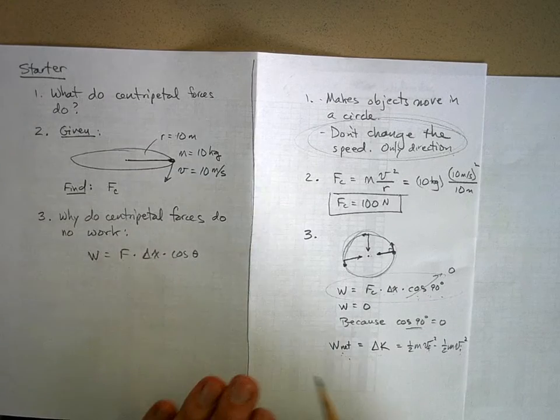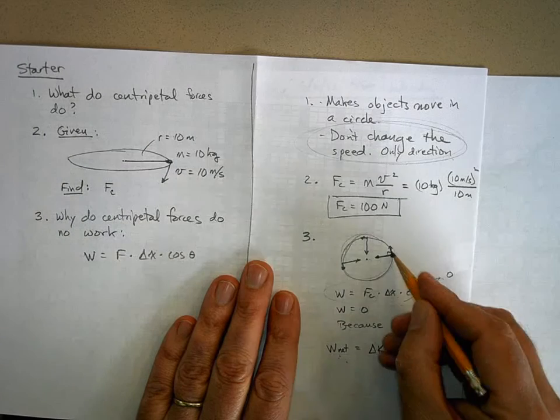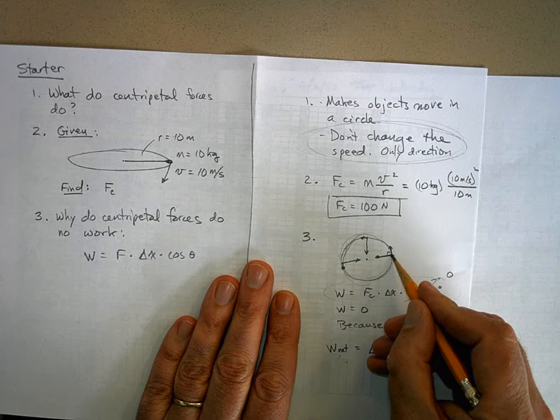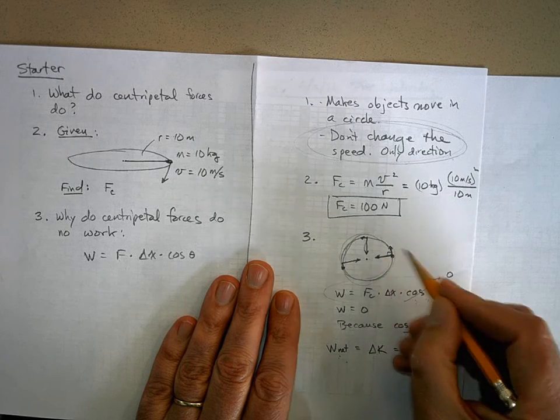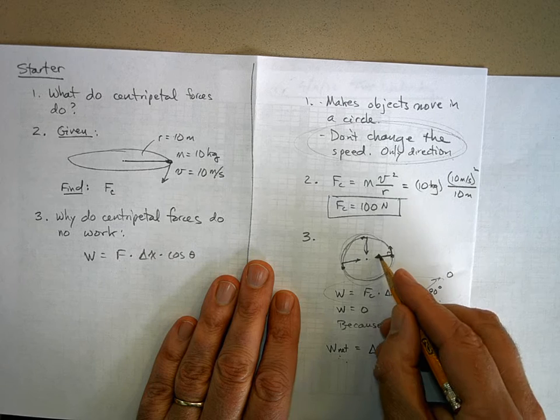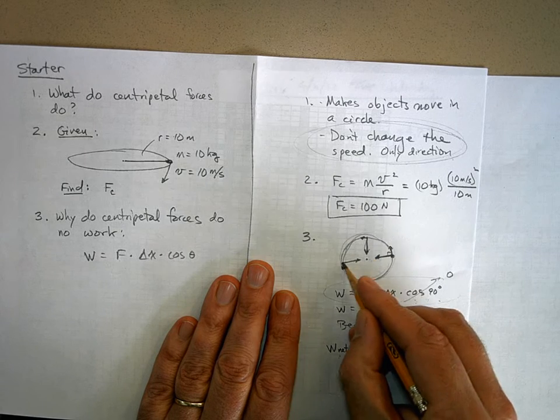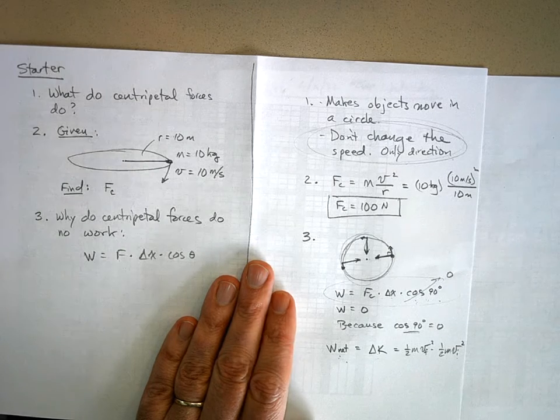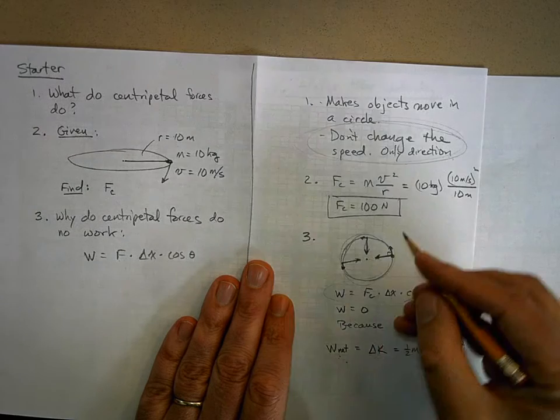Now look, here's an object moving in a circle. Here's the force acting on it. Maybe this is a planet in orbit around this star and this is a force of gravity or something. So here's the force. Centripetal forces are always pointed towards the center of the circle.